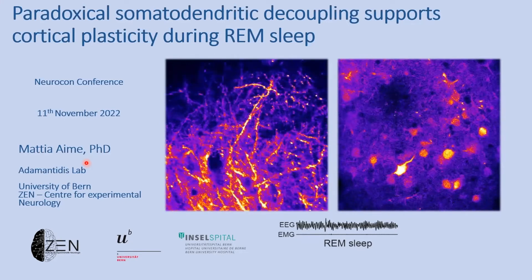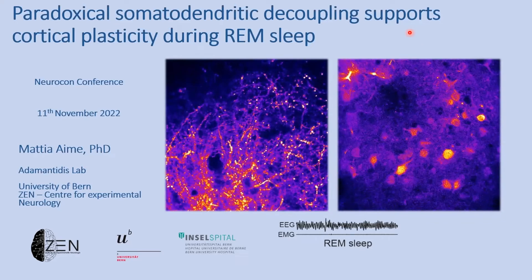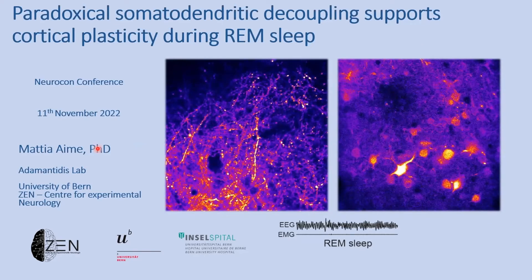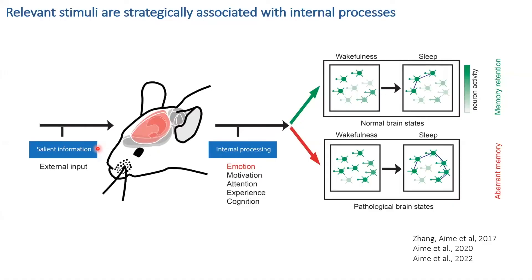I titled my talk 'Paradoxical Somatodendritic Decoupling Supports Cortical Plasticity During REM Sleep.' All my research has been based on a common hypothesis, which is based on the fact that relevant information — information that has to be remembered — is strategically associated by the brain with internal processes. I'm mostly interested in emotions.